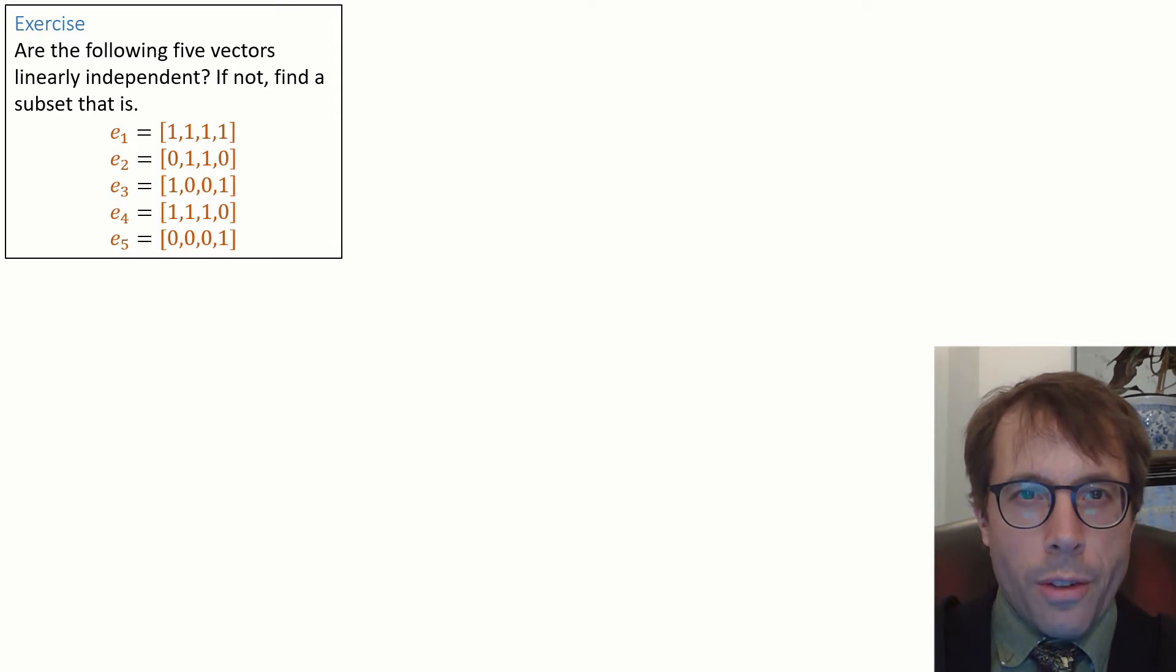Well just looking at these vectors we can straight away see two linear relationships between them. e2 plus e3 is equal to e1 and also e4 plus e5 is equal to e1.